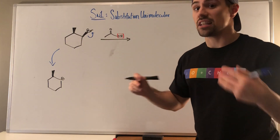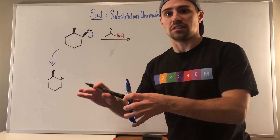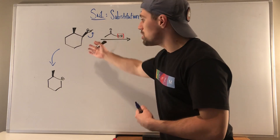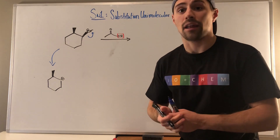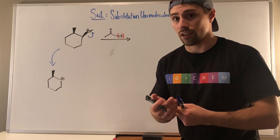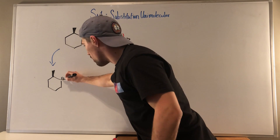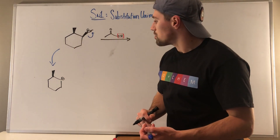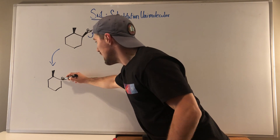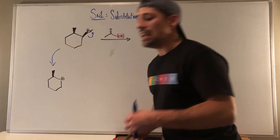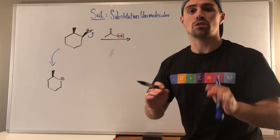Remember, whenever we do solvolysis in SN1 problems, we have to freeze because we need to think to ourselves: we just made a carbocation. Nature likes stability — nature will do things to get more stable. We have an atom that doesn't have a full octet; we're unstable. Can we improve this carbocation either through a methyl shift or a hydride shift? And the answer is we absolutely can do it through a hydride shift.